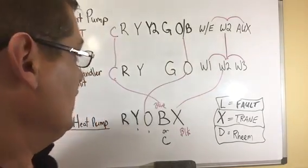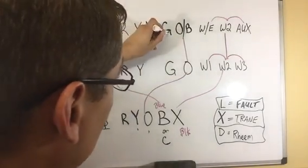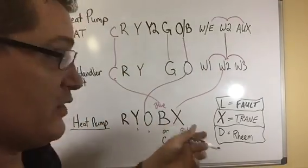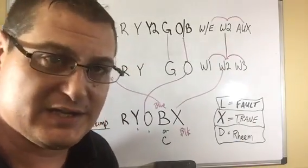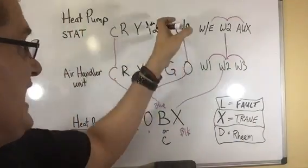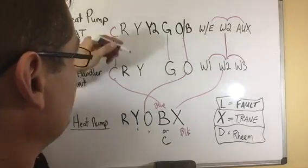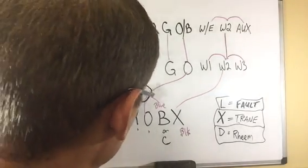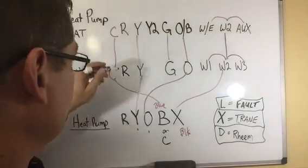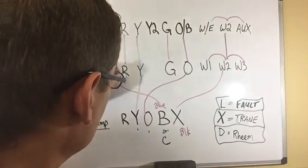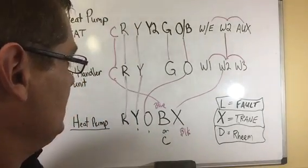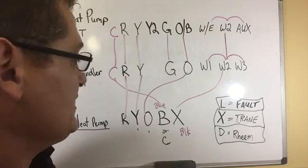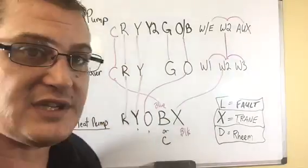G, the outdoor heat pump doesn't require a call for fan, so that only goes between your stat and your air handler. Then you have the compressor, which is Y, and those just all tie together. Then you have your 24 volts. Those all tie together. That's it. That's an entire heat pump system wiring. It's pretty simple.